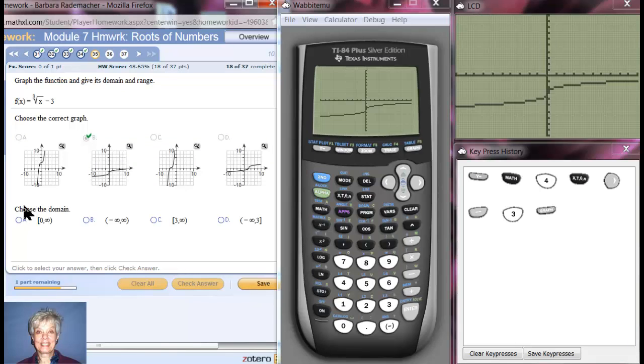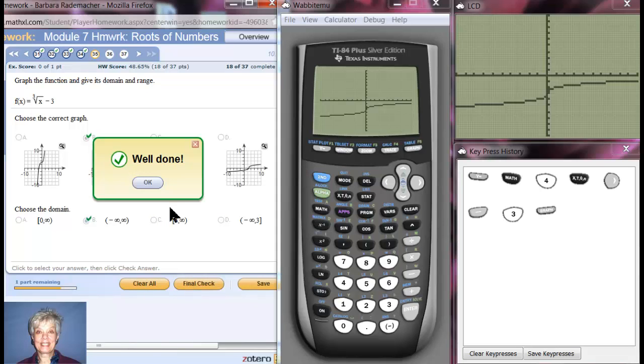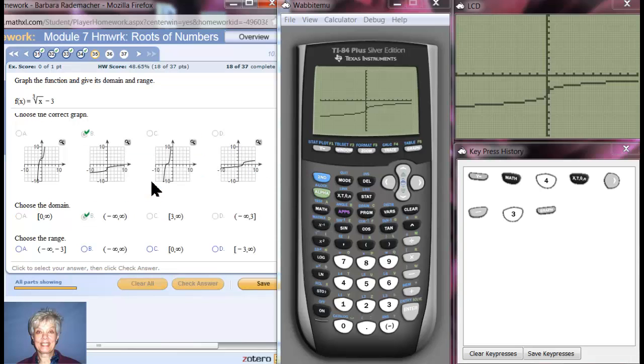Choose the domain. We'll notice that for this it goes to the left forever and to the right forever, so the x-coordinates of all of these points are going to be on the entire x-axis, and so negative infinity to positive infinity is the only answer we can give.